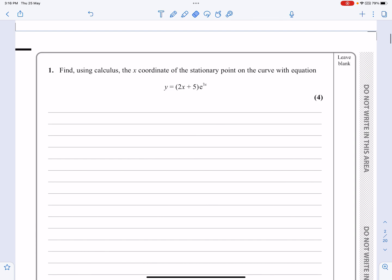Let's have a look at it then. It says, find using calculus the x-coordinate of the stationary point on the curve with equation y equals (2x + 5)e^(3x).